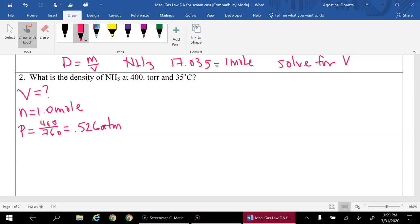And then we're going to plug in our T, which is 35 degrees C plus 273. So that's 308. And our R.